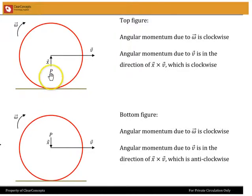So we have two configurations. One where that point P is below the center of the disk. The other where it is above the center of the disk. In the top figure where it is below the center of the disk, you can see that as it is rolling towards the right,